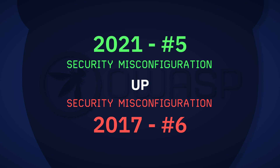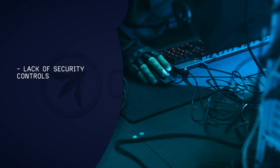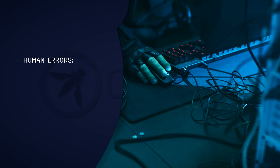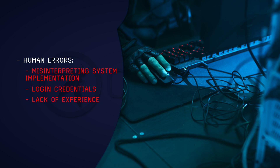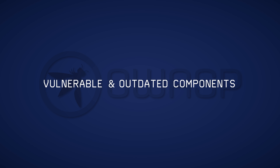Security misconfiguration, in at number 5, up from number 6, was present in 90% of applications tested — not surprising given the rise in highly configurable software. Security misconfiguration is a failure to implement all the security controls for a server or web application, or implementing security controls but with errors. These occur through a broad range of human errors: misinterpreting a system implementation, not changing default login credentials, a lack of computer skills, or mistakes made under time pressure.